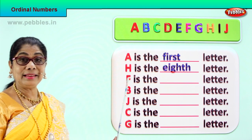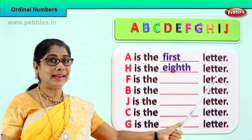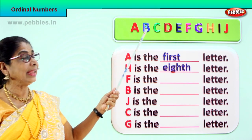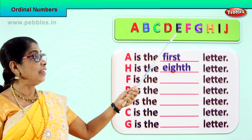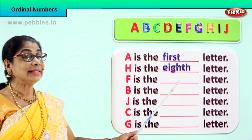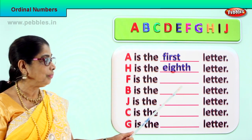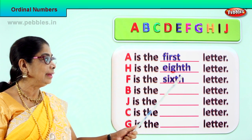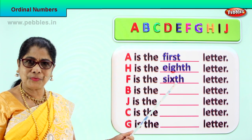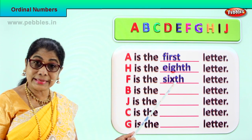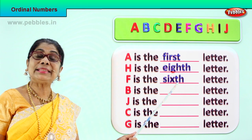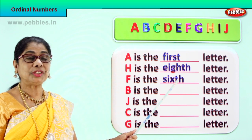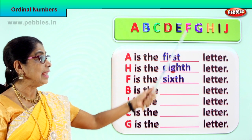Now let's look at the letter F. What's the place for letter F? First, second, third, fourth, fifth — letter F is the sixth letter. Spell six: S, I, X. All you need to do is add TH. Spell sixth with me: S, I, X, T, H — sixth. F is the sixth letter.